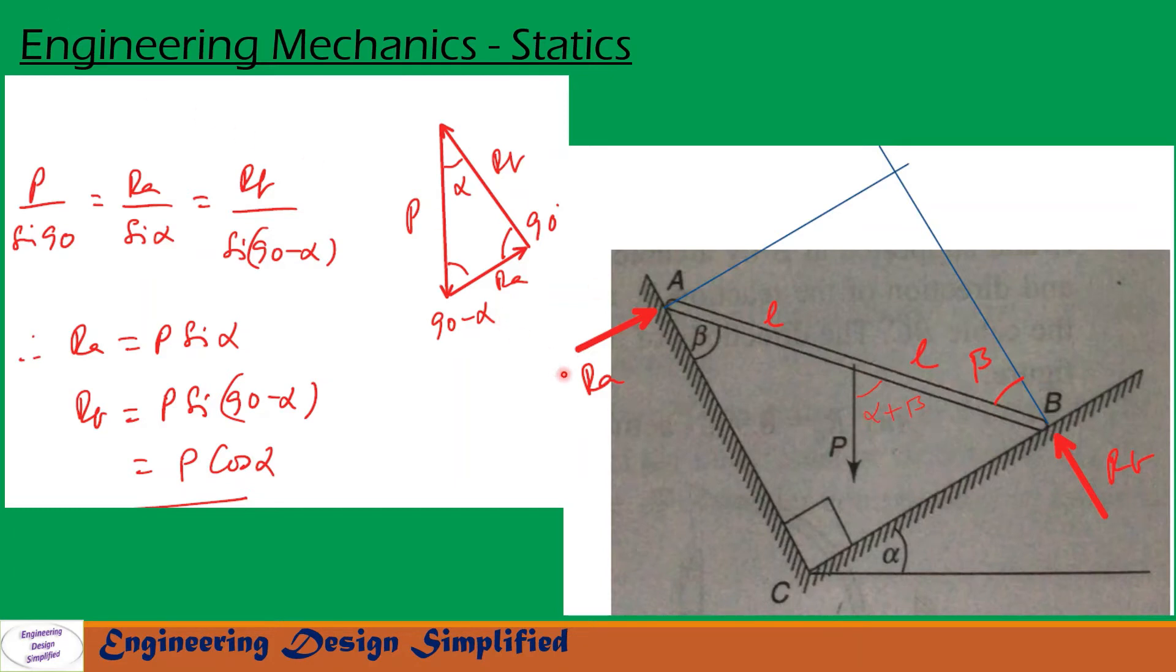Now let us draw a force triangle since there are three forces. First, let us take P. Let us draw an arrow parallel to P, parallel to this P here, so drawn here. And let us draw from the end of this P, RA that is parallel to this RA here. And from end of this RA, let us draw RB parallel to this.